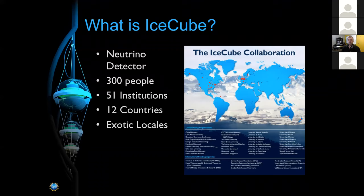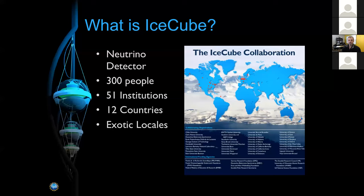At any given time there are probably between 300 and 400 physicists actively working on the data set. We're scattered throughout the world — predominantly northern Europe, mostly Germany, and the U.S., but we also have some sites in Australia, New Zealand, and Japan. That makes scheduling shared meetings interesting when you're trying to find times that aren't ridiculously early or late for people.